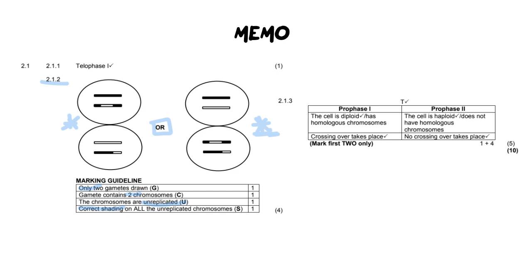If we go over to the table answer it's out of five. You get one mark for drawing the table and then your remaining marks go towards the differences. So the differences are either the cell is diploid or haploid, or has homologous chromosomes, does not have homologous chromosomes, crossing over takes place as we mentioned or no crossing over takes place.